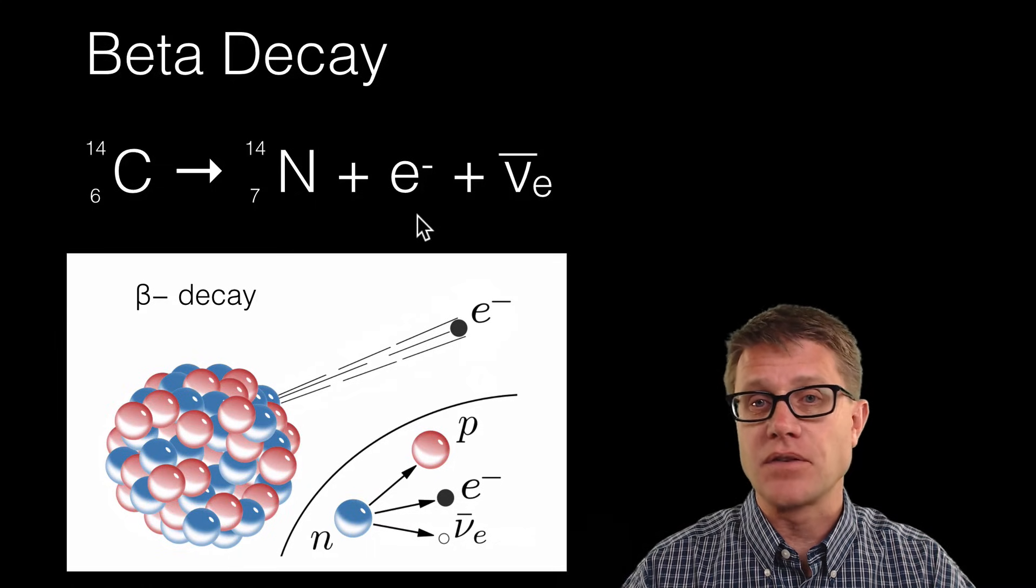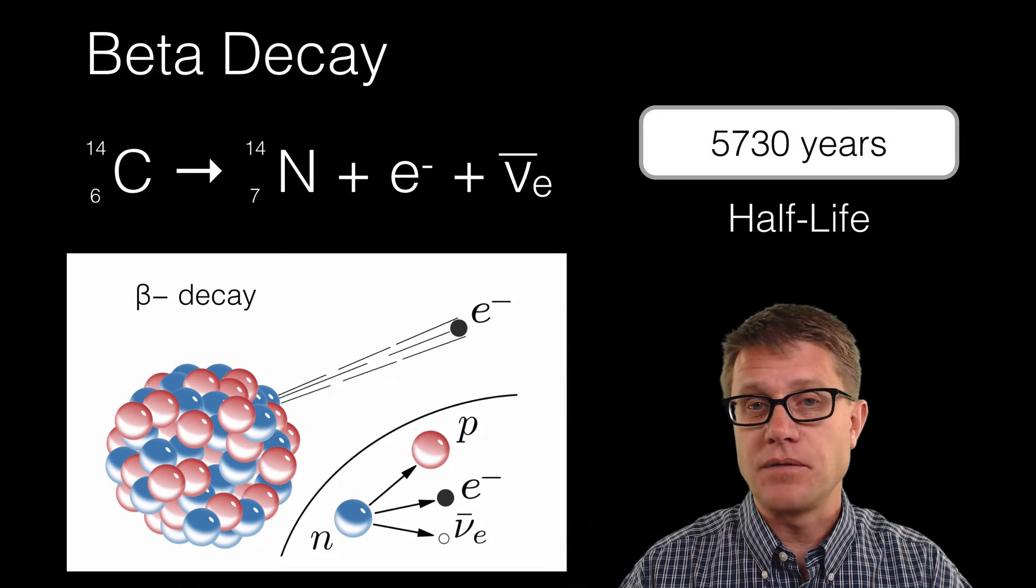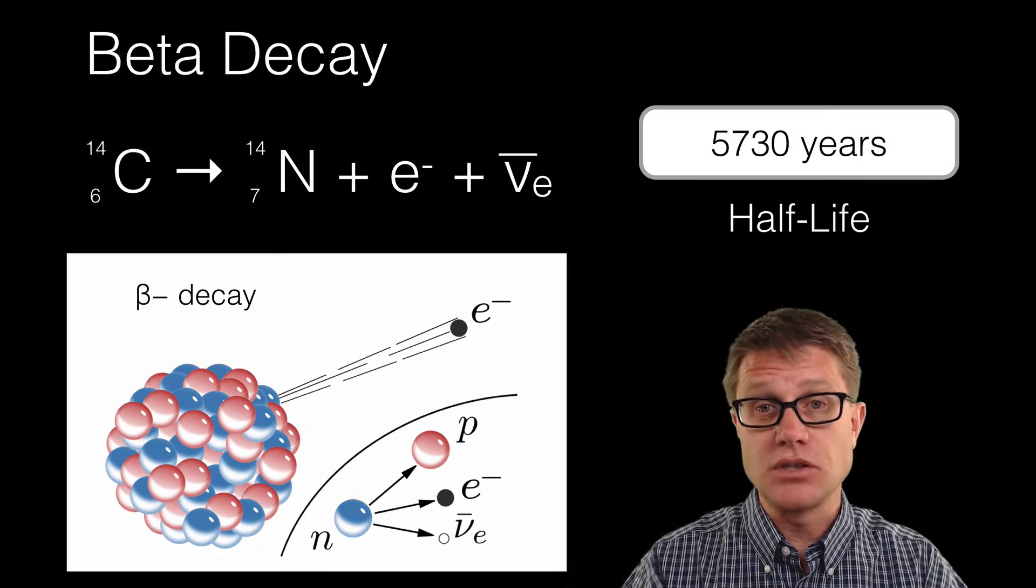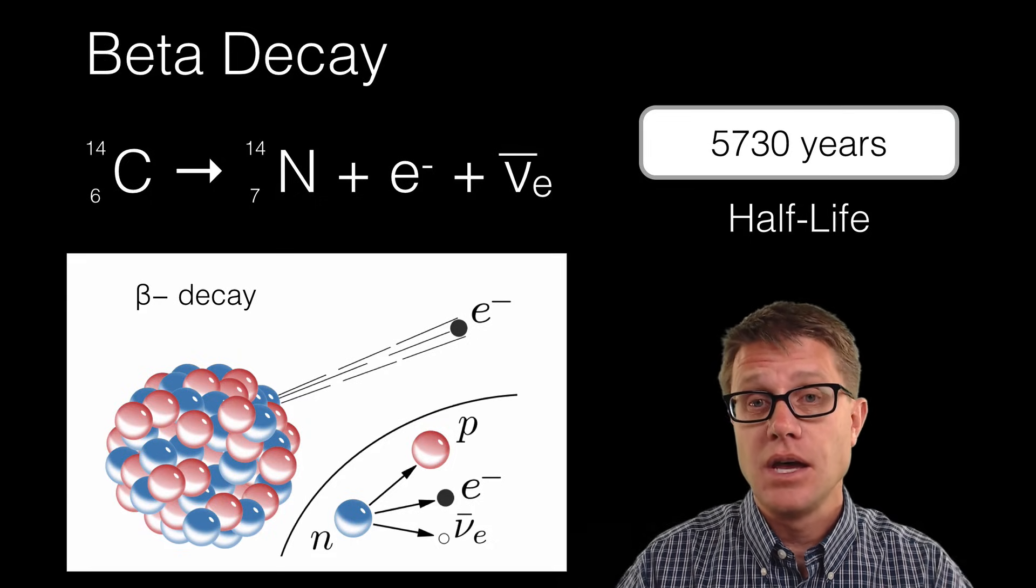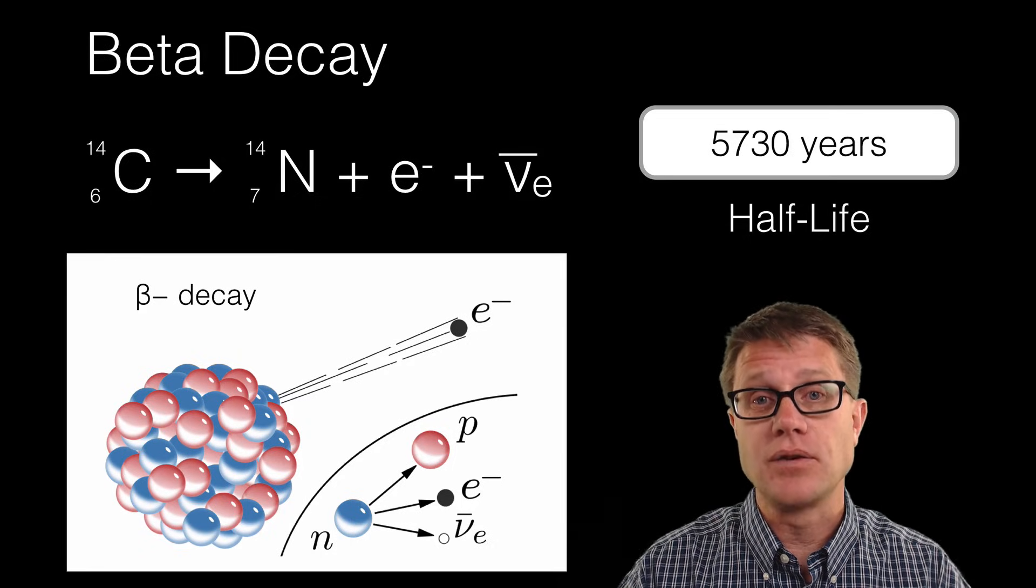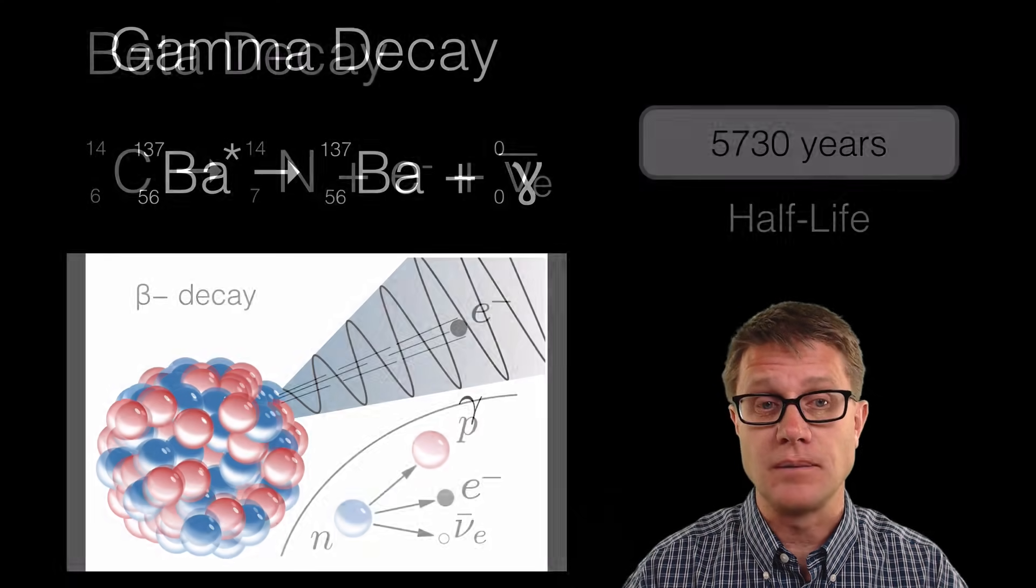What is the half-life of carbon-14 decay? It is going to be 5,730 years. So we had shown that just a few slides ago—it was around 6,000 for a half-life. And we can use this to date living material.